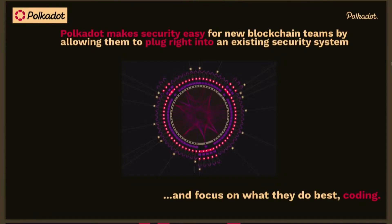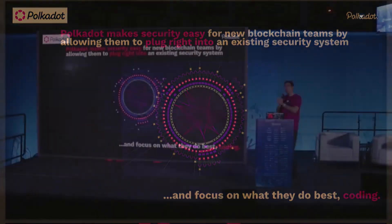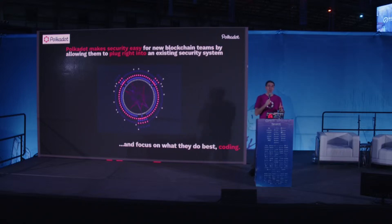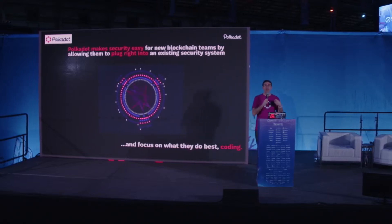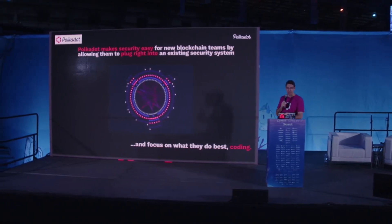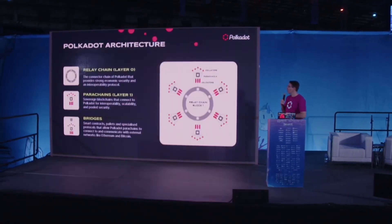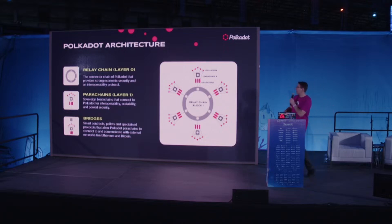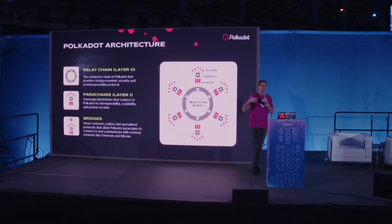Polkadot makes this easy by allowing you to develop a chain and plug in to the existing central chain of Polkadot — what we call the relay chain — and allows the developers of that chain to focus on what they do best: the actual rules of that blockchain and what you want it to do. The relay chain, or layer zero, is the central chain of Polkadot.